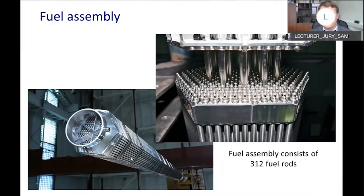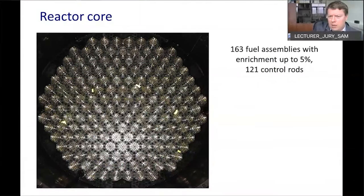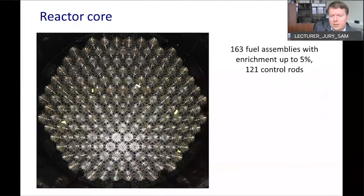You may see typical fuel assemblies for the Russian VVER reactor type. Here is a top view of the VVER-1200 core. One core includes more than 163 fuel assemblies, and with up to five percent enrichment, the total fuel mass is more than 69 tons.